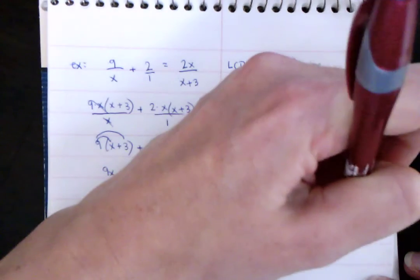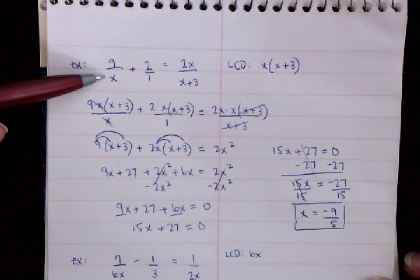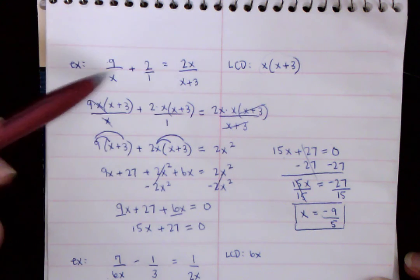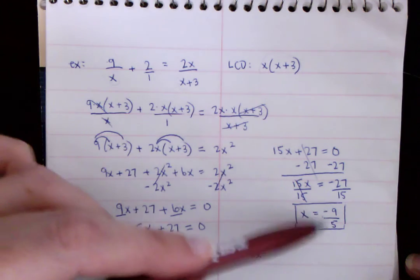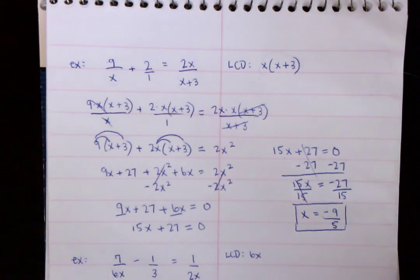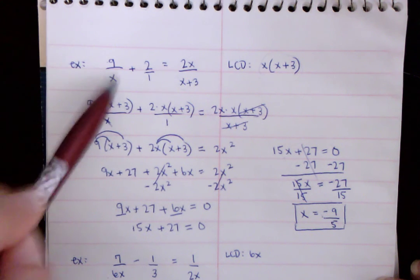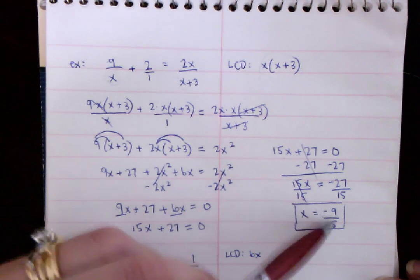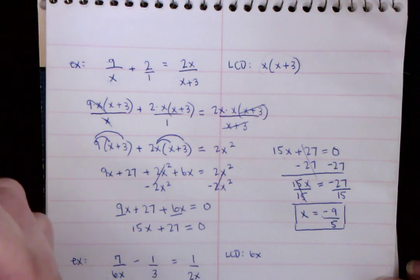And the one thing, again, you're always going to want to go back and make sure that if you plugged that answer back into this, it would not make the bottom zero. That's really the most important part. But there's only one answer, so it's likely not going to make the bottom zero. But if you look down here, if I plug it in here, that's not going to be zero. And 3 plus negative, this is 1 and 4 fifths, that's not going to be zero either. So we're good.